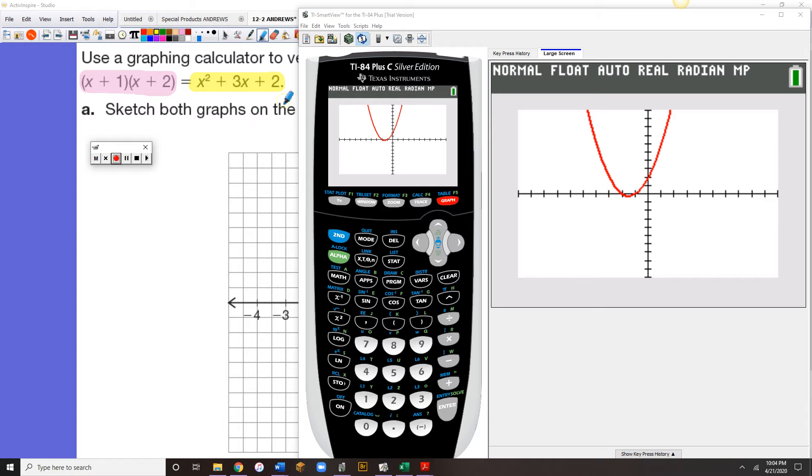So why am I showing this to you? Well, I'm showing this to you because it's a way of checking if your factored form and your standard form are the same. If the graphs didn't come out the same, it would mean that you double distributed incorrectly.